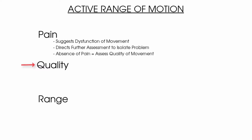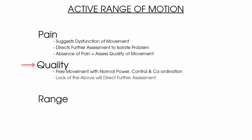In terms of quality, good quality indicates that the brain and local tissue are both happy and able to perform the movement. It means that the patient will look very willing to move and have sufficient power in movement with good control and coordination. If these are lacking, movement quality can be questioned and will likely direct further testing to establish why the movement is of poor quality — for example, weakness which could be due to a myotomal weakness from a spinal pathology or a deconditioned muscle from the local area.